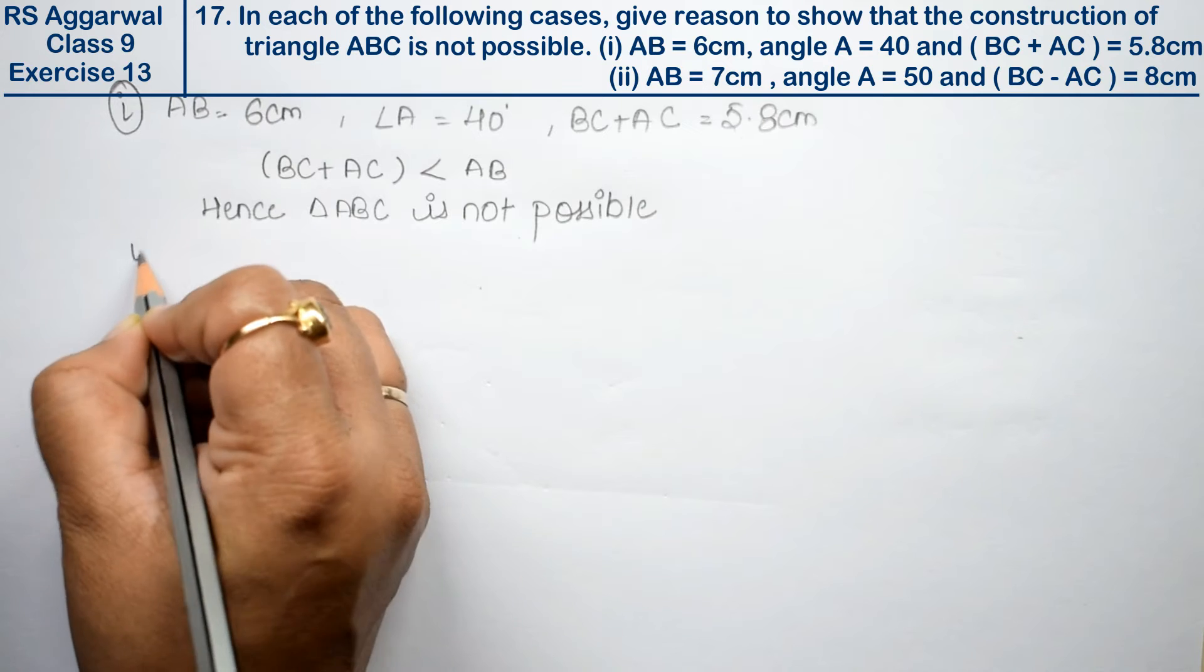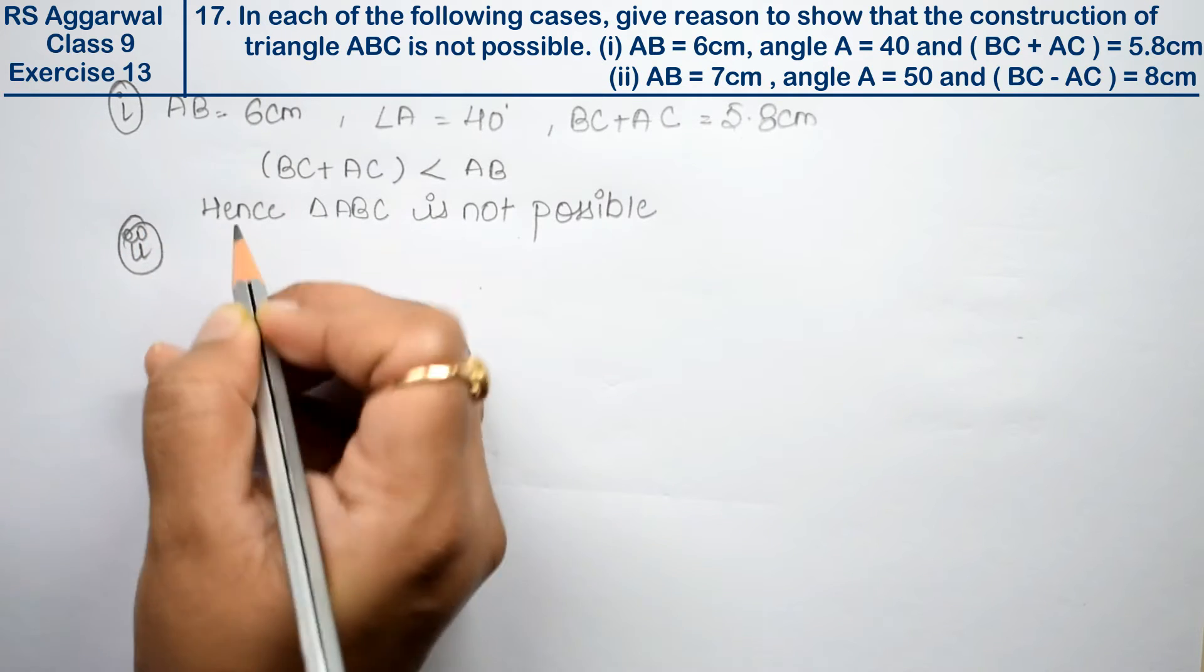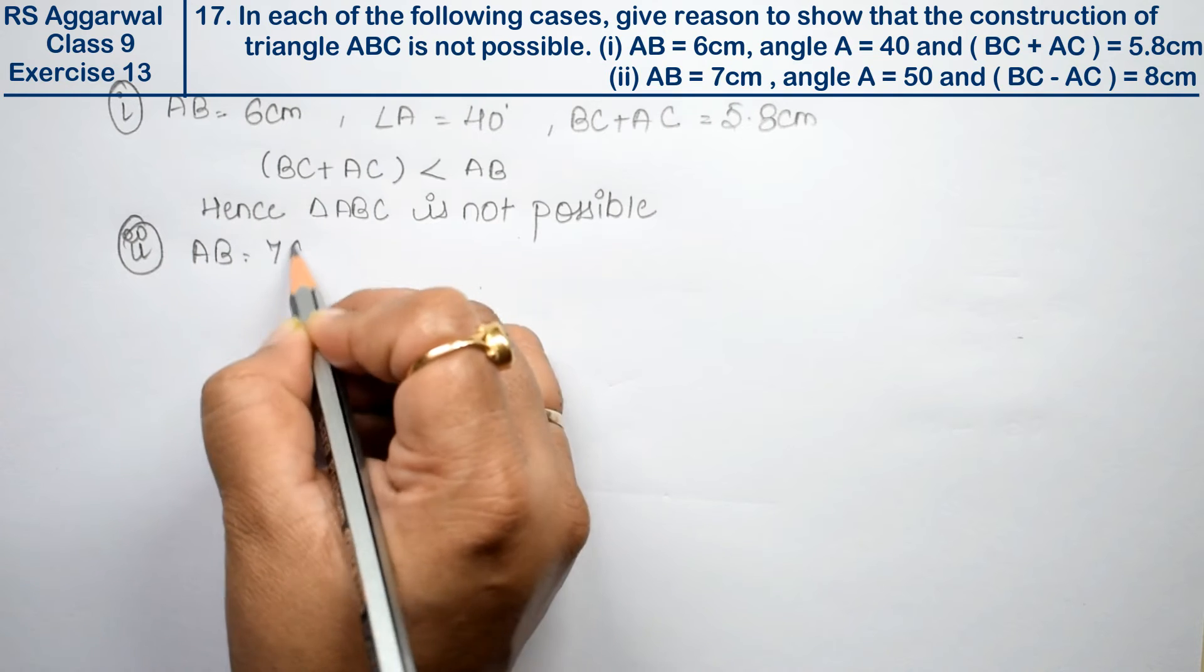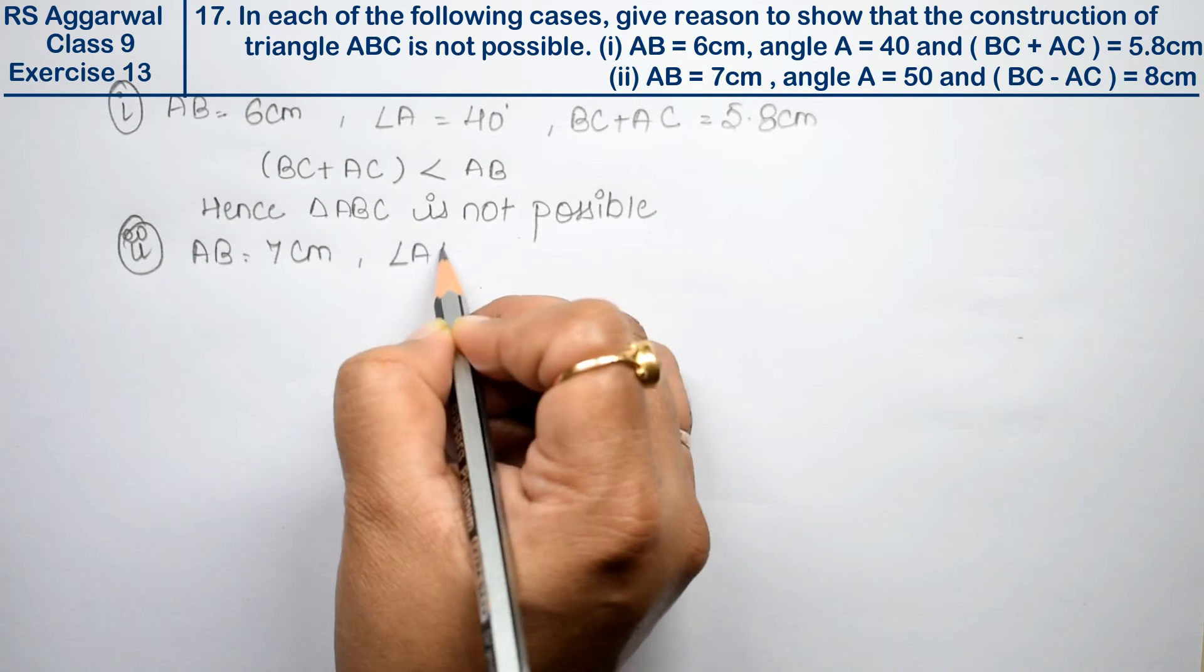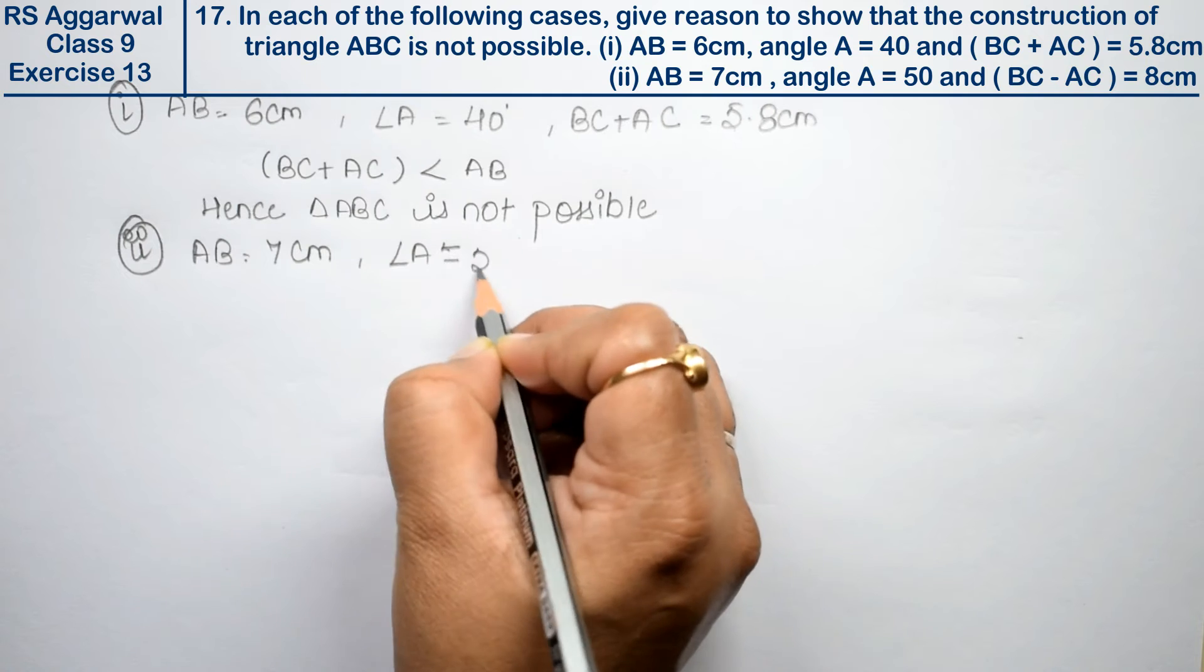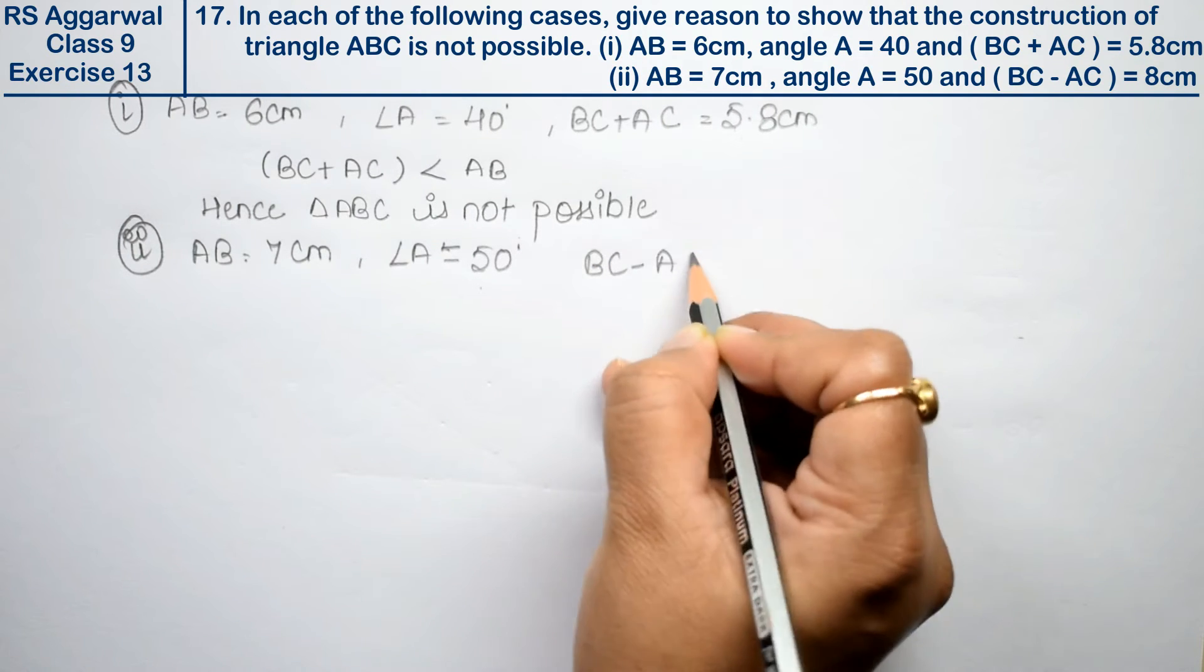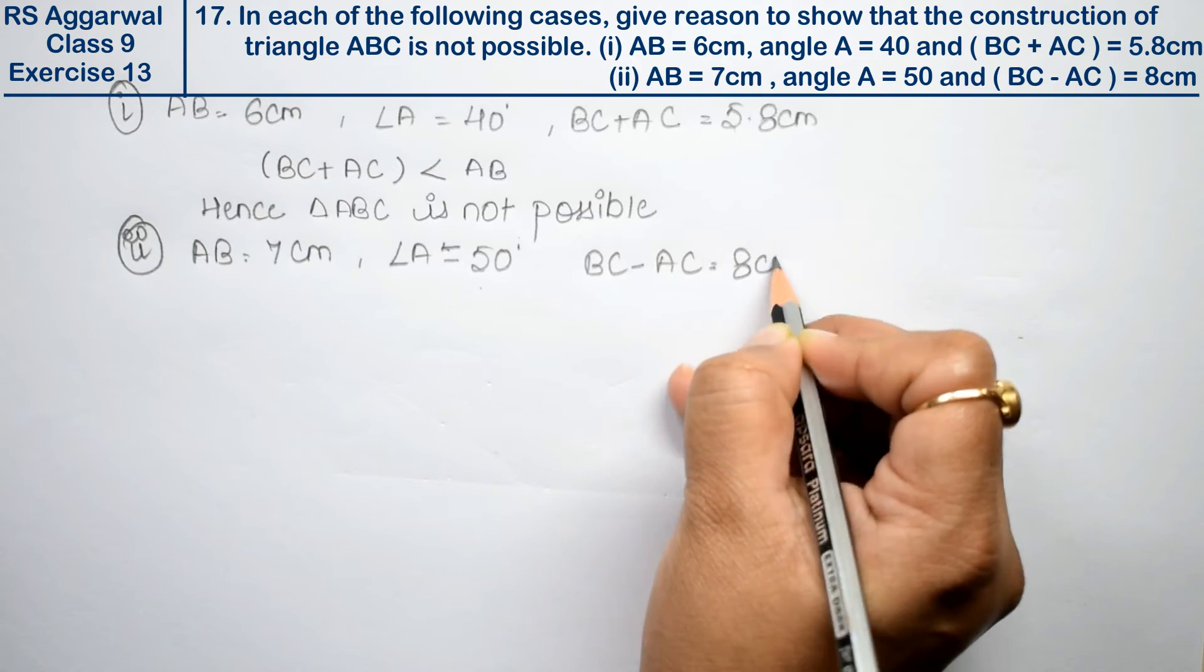Second part is AB equals to 7 cm, angle A equals to 50 degrees, and BC minus AC equals to 8 cm.